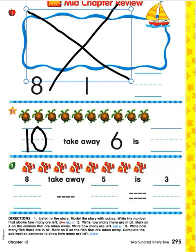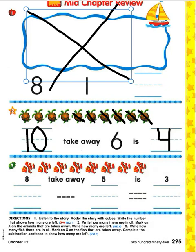Ten take away six is how many? Let's take away six: one, two, three, four, five, six. How many are left over after we take away six? Four. There are four left over. Ten take away six is four.